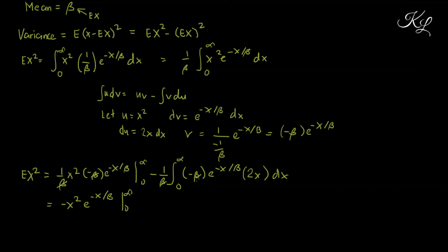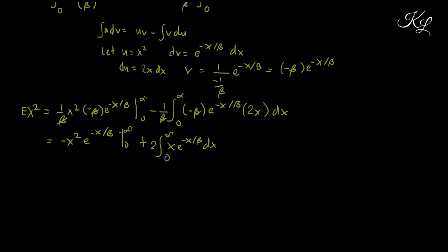Then minus the integral of V dU — V is negative beta e raised to negative x over beta, and dU is 2x dx, from 0 to infinity, with the constant 1 over beta. Canceling beta, we get negative x squared e raised to negative x over beta from 0 to infinity. Canceling beta again in the remaining term and accounting for the double negative, we get plus 2 times the integral of x e raised to negative x over beta dx from 0 to infinity. Similar to the mean derivation, substituting infinity yields an indeterminate form, so we use L'Hôpital's rule.